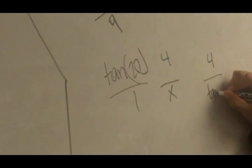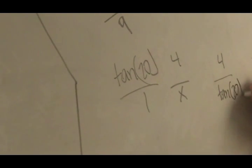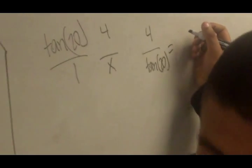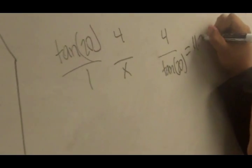So then I divide 4 by tangent of 20 equals 11.01.